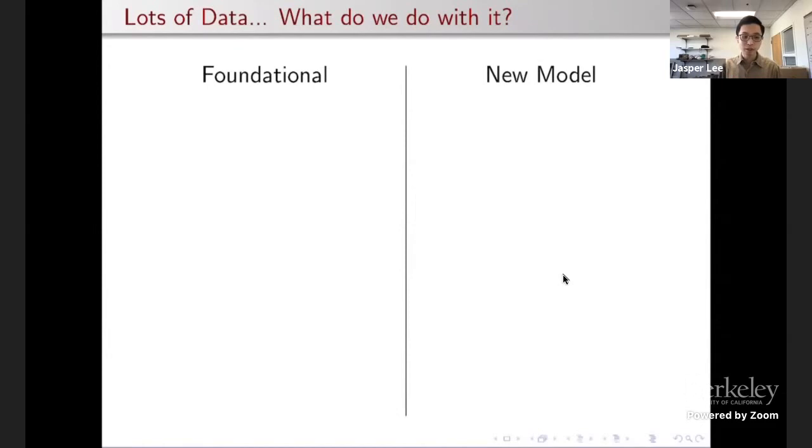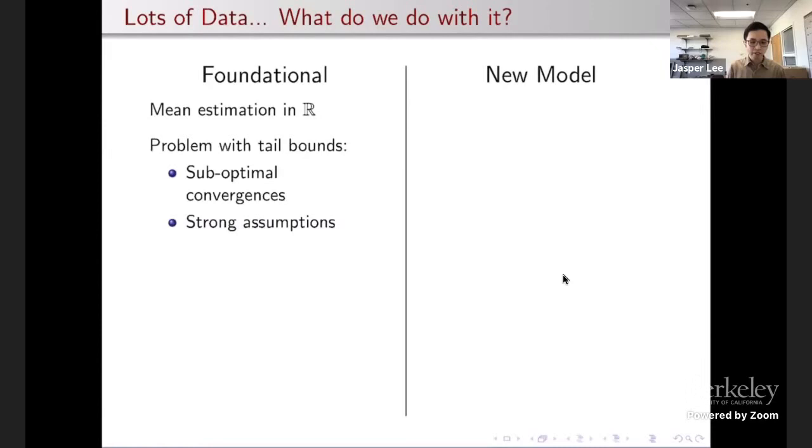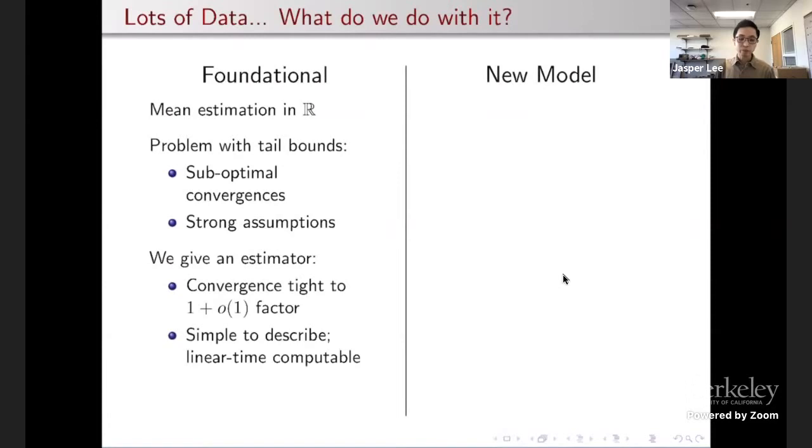So I'm interested in both foundational and classical problems, as well as problems in new models. So let me highlight two of my recent results, both with my advisor Paul. First, we resolve a fundamental problem in statistics. Namely, how do we optimally estimate the mean of a real value distribution? The standard solution is to just use the empirical mean. Namely, you sum up all your samples and normalize it. And then we use tail bounds to analyze it. The issue with this kind of approach is that different tail bounds actually give you different convergences and require you to make different kinds of assumptions about the distribution. And in fact, the convergences are all suboptimal. So we settled this problem by giving an estimator with convergence that it's not only big O type, but we even get the right constant parameterized by the variance. And moreover, our algorithm is simple to describe and computable in linear time. And therefore, it's actually applicable in practice.